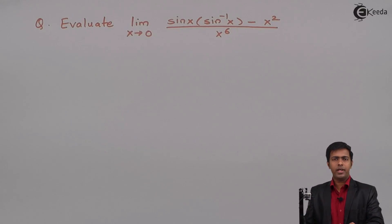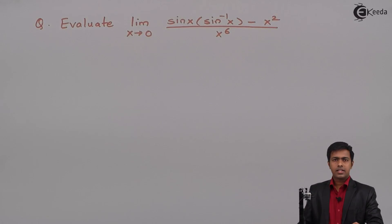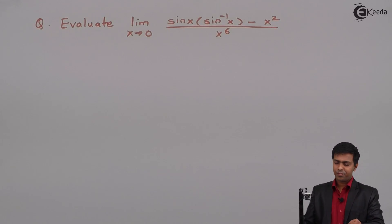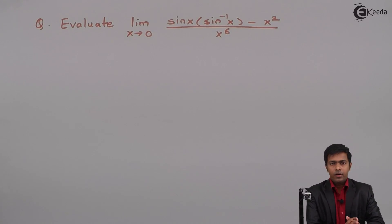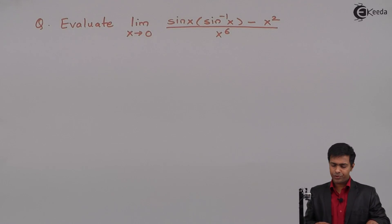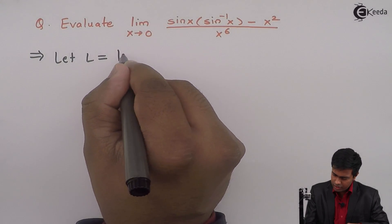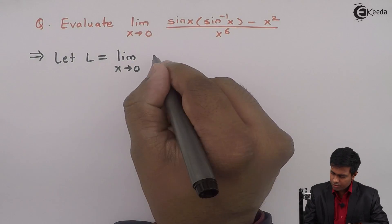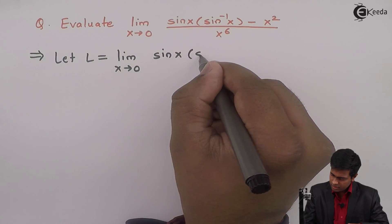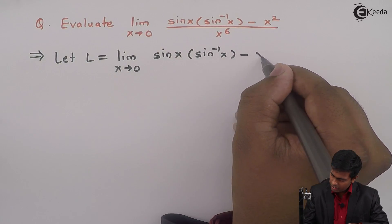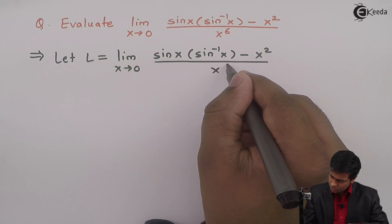Hello everyone. In this problem we have to evaluate the limit x tends to 0 of sin(x) into sin inverse of x, minus x squared, whole upon x raise to 6. Before solving the problem I will assume the given limit as L. So let L equal to limit x tends to 0 of sin(x) · sin inverse(x) minus x squared upon x raise to 6.